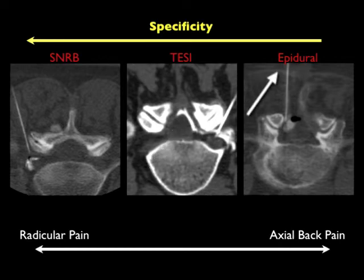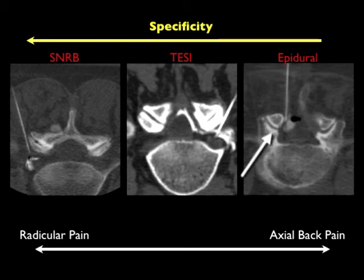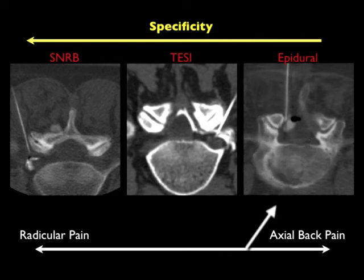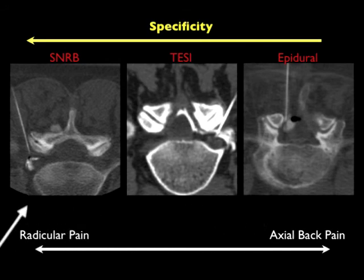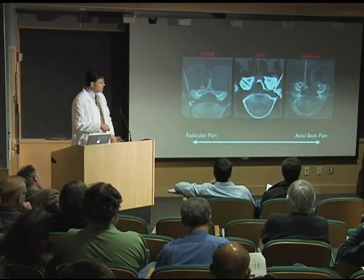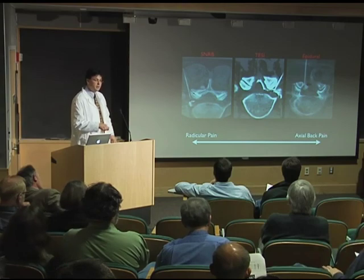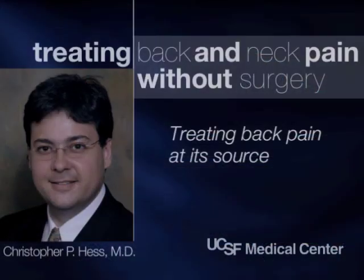And then I have the epidural steroid injection — the foramina are out here, and this one I've gone between the vertebral bodies. I inject the contrast. This approach is mostly for back pain or spinal stenosis, whereas the transforaminal approach is mostly for radiculitis or radiculopathy. So there's kind of a spectrum that we go along when we're looking for the source.